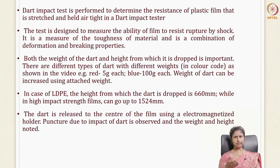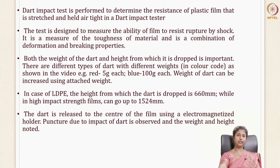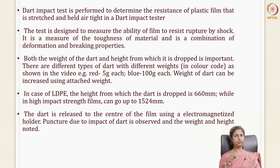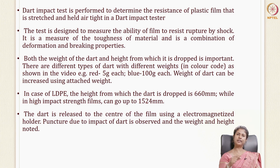Some films like LDP require lesser weight, while stronger films need added weights and greater height. LDP uses a dart dropped from a height of 660 millimeters, while a high impact strength film can go up to 1524 millimeters. The dart is released at the center of the film using an electromagnetized holder, and the puncture it causes is observed. You note the weight and height at which it punctures. It is a trial-and-error method — for example, if at 100 grams there is no puncture but at 150 grams there is, you test all weights between 100 and 150 to find the minimum weight at which the plastic film punctures.